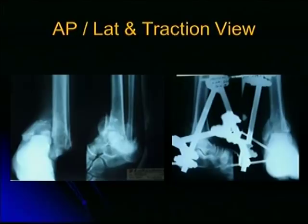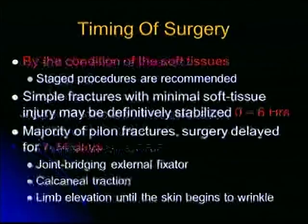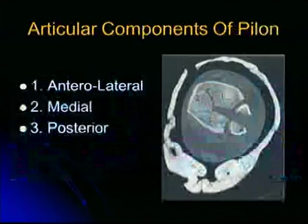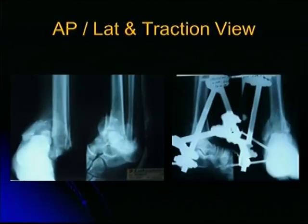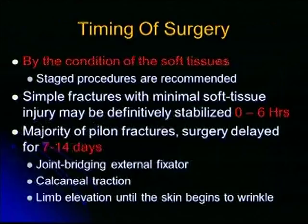This is the traction view — for this particular fracture, some consultants said it required talotibial fusion and open reduction was not possible. But just by applying traction and temporary external fixation, it changes the whole attitude toward that fracture. The articular components of the pilon are the anterolateral, the medial, and the posterior fragments — these are the major fragments.